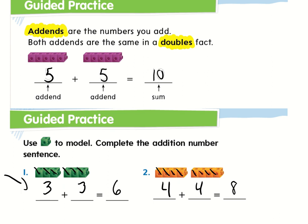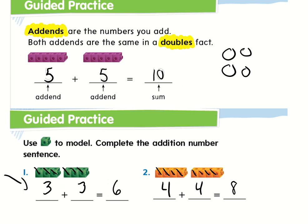Every single time that you're doing these, boys and girls, you're always getting an even number for your answer when you add a double together — it will be even every single time. An even number is something that you can divide into two equally. So let's say if I had four cookies and I was going to share them between two people — we know this is an even number because it can go into those two people equally, so one person gets two cookies and the other person gets two cookies. Every single time you add a double, boys and girls, it will be an even number.